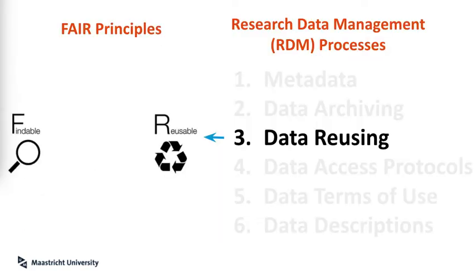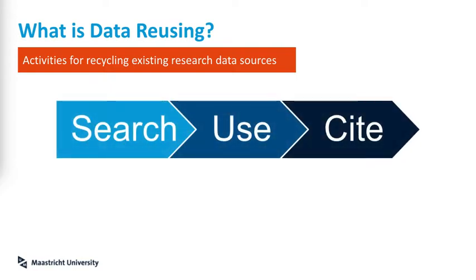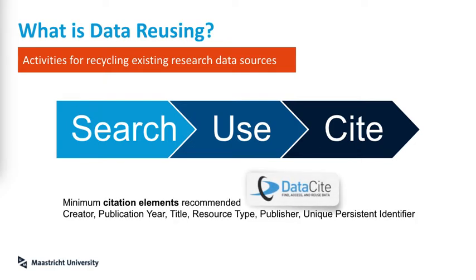The next one is data reusing, and it goes hand in hand with the last two. So what is data reusing? All the activities for recycling existing research data sources. All of us have searched data one day and some of us have used the data, but not many have cited the data sources. DataCite recommends a set of minimum elements for citations like creator, publication year, title, resource type, publisher, and unique persistent identifier.